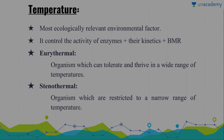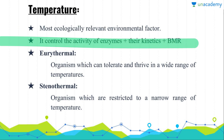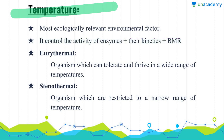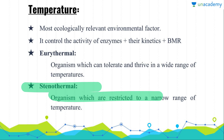Now let's begin with temperature. Temperature is the most ecologically relevant environmental factor because it controls enzyme activity, their kinetics, and the basal metabolic rate. Whenever we talk about temperature, there are two kinds of organisms: eurythermal and stenothermal. Eurythermal organisms can tolerate a wide range of temperatures, while stenothermal organisms are restricted to a narrow range of temperature and cannot survive in a wide range.